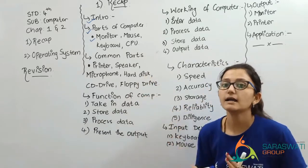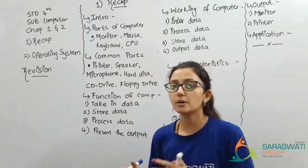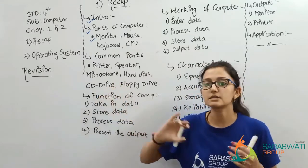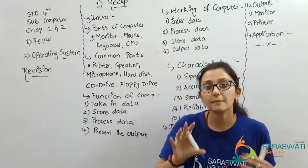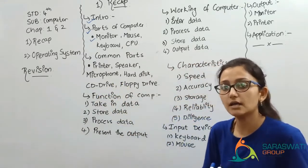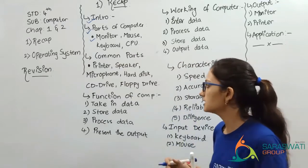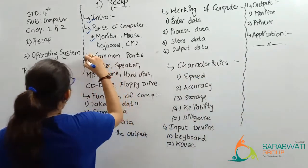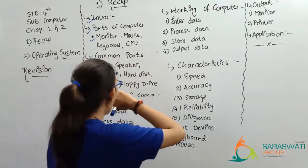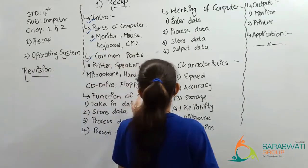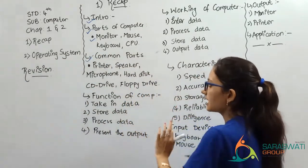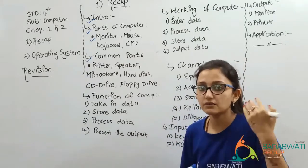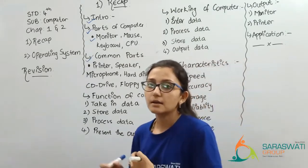Next is hard disk, where all our data is stored. Then CD drive — a drive where you can use a movie CD. Next is floppy drive, which is like a drive such as D drive or CD drive on our computer.